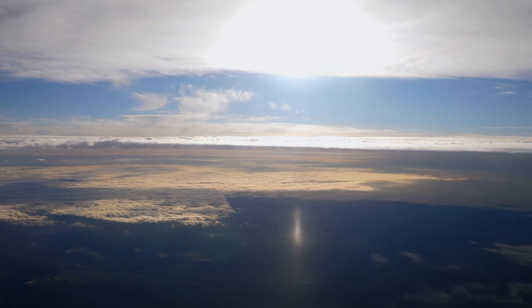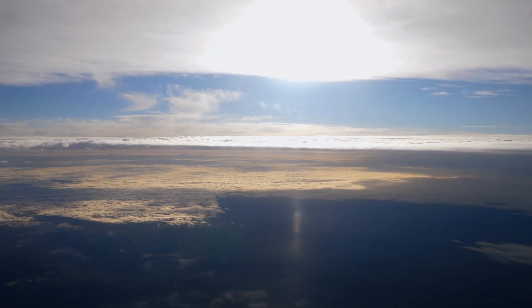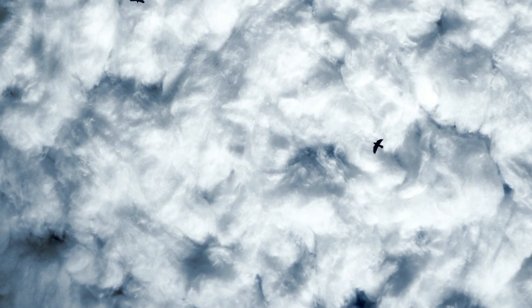One of the most striking details revealed by Webb's observations is the presence of bright streaks and patches in Neptune's atmosphere. These are actually methane ice clouds, which reflect sunlight before it can be absorbed by the surrounding methane gas. The clouds form at high altitudes where temperatures are extremely low, allowing methane to condense into icy particles. These high-altitude clouds appear brighter in infrared because they reflect sunlight more effectively than the deeper layers of Neptune's atmosphere.